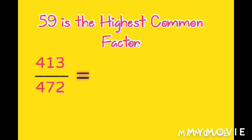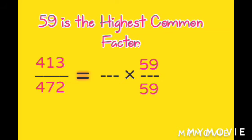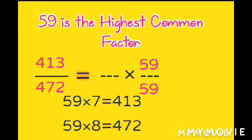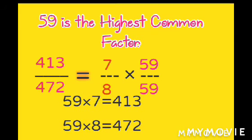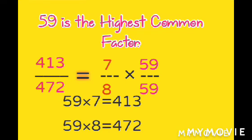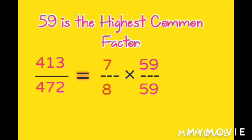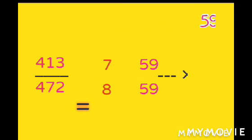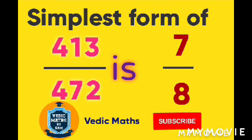Therefore, 413 by 472: 59 into x equals 413, and 59 into 7 equals 413, so put 7 in the numerator. 59 into 8 equals 472, so put 8 in the denominator. Cancelling 59 and 59, the simplest form of 413 by 472 is 7 by 8.